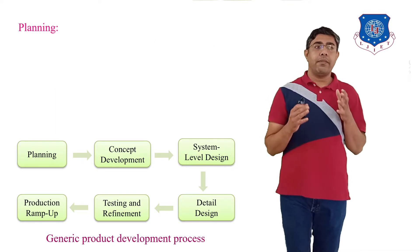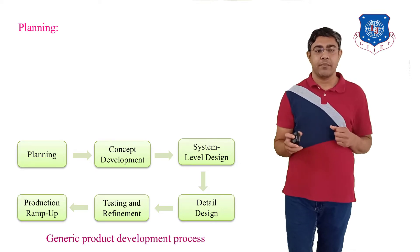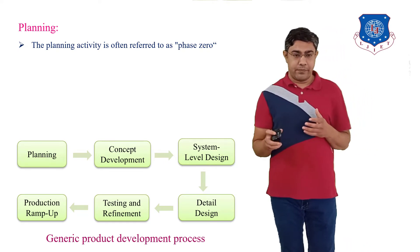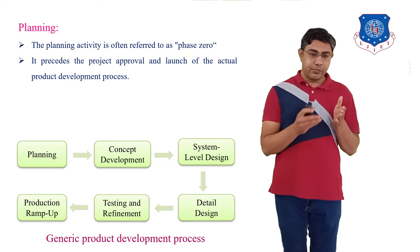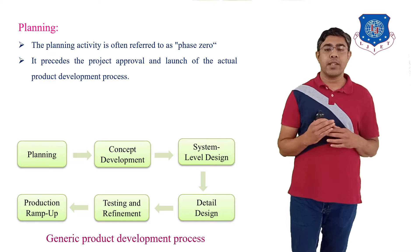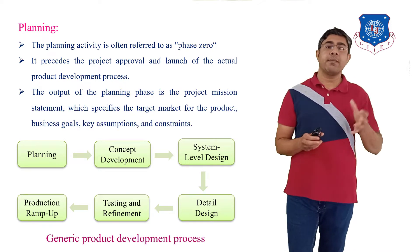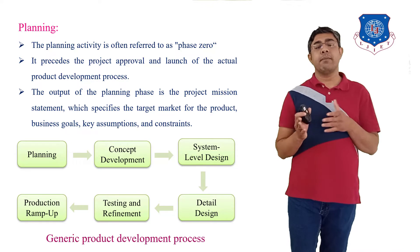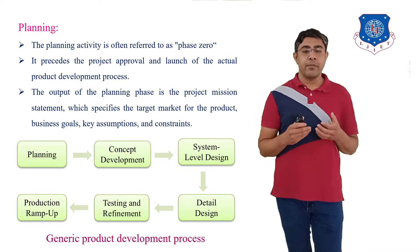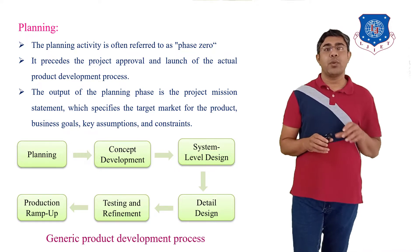The first phase of the Generic Product Development Process is Planning. Planning activities are often referred to as phase zero — it precedes project approval and launches the actual product development process. The output of the Planning phase is the project mission statement, which specifies the target market of the product, business goals, key assumptions, and constraints.